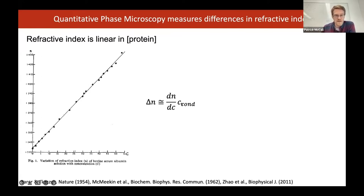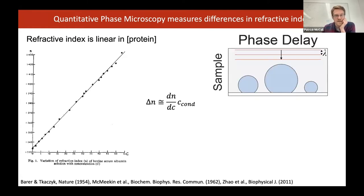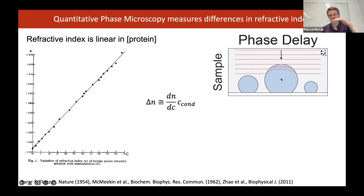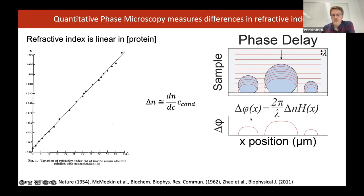Mathematically, you can write this as ΔN — the refractive index difference — is proportional to the concentration of the condensed phase. For the proteins I'll discuss, the residual protein in the dilute phase is so small it can be neglected. In quantitative phase imaging, we have micron-sized droplets in contact with a glass substrate. Phase fronts coming in from above are delayed as they traverse the high refractive index droplets. At the detector, after processing, we get a phase image where the phase shift as a function of space has been retained quantitatively.